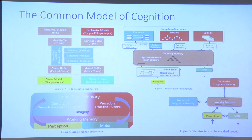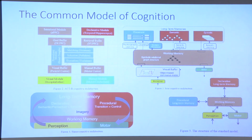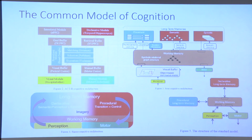Recently, I've been involved in an effort initially called the standard model of the mind, by analogy to the standard model in particle physics, now called the common model of cognition under community input. That's a joint project that started with John Laird and Paul Rosenblum, who were originally involved with Newell and the development of his SOAR architecture, and myself, involved in the ACT-R architecture.